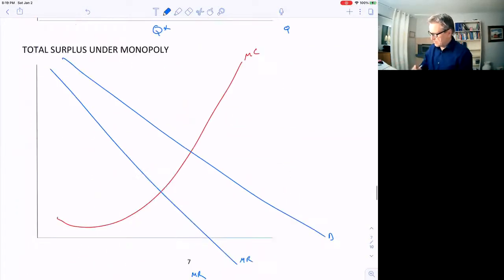Now here's a monopoly and I've got the demand curve and the marginal revenue curve here, as well as the marginal cost curve here. And in this case, the monopolist is going to set a quantity Q star down here and a price, we'll call it P star here.